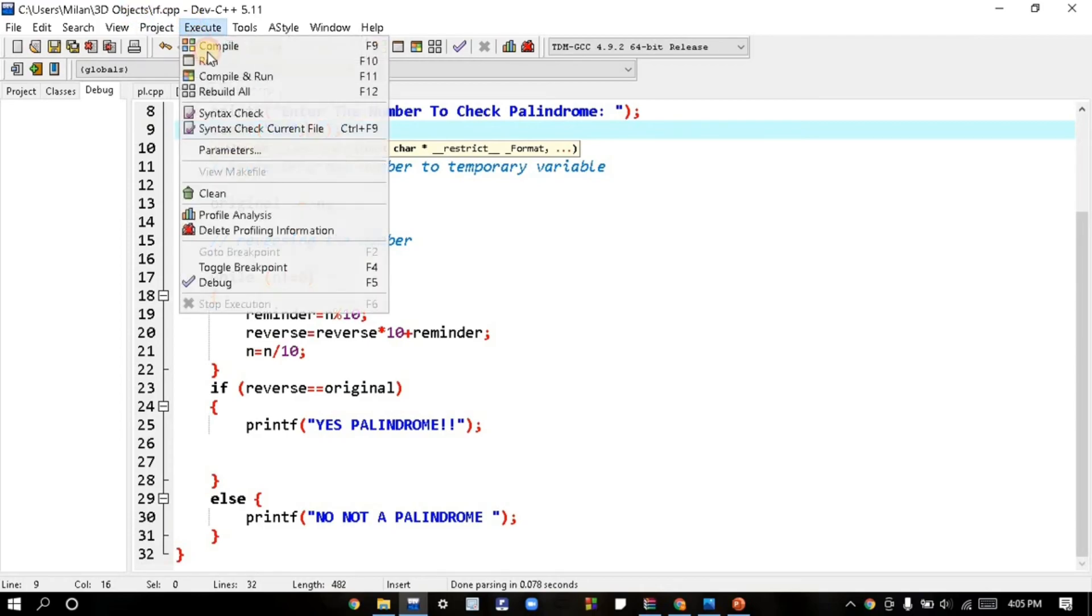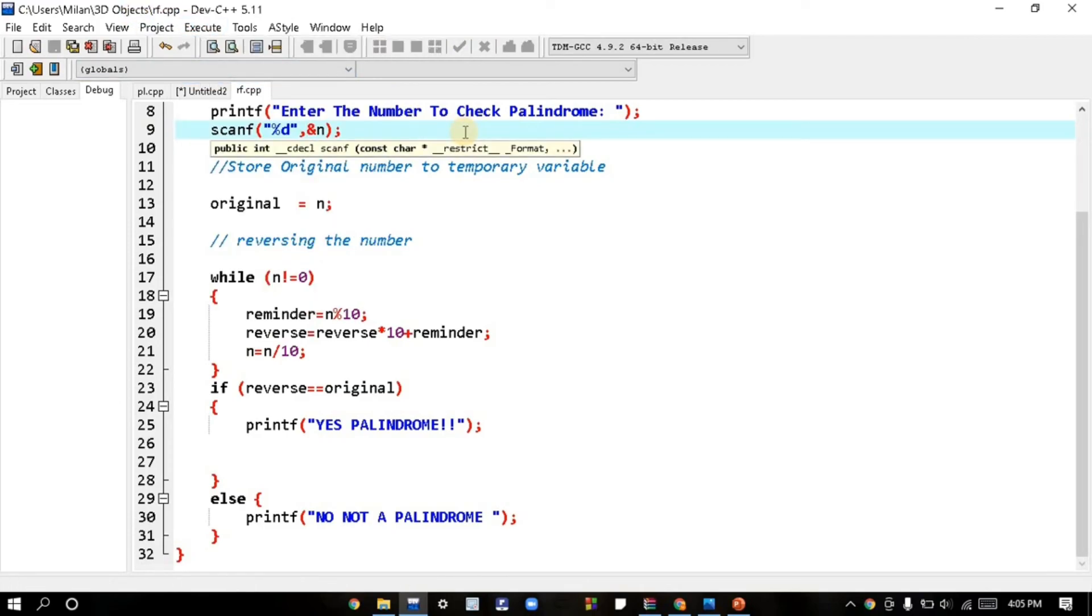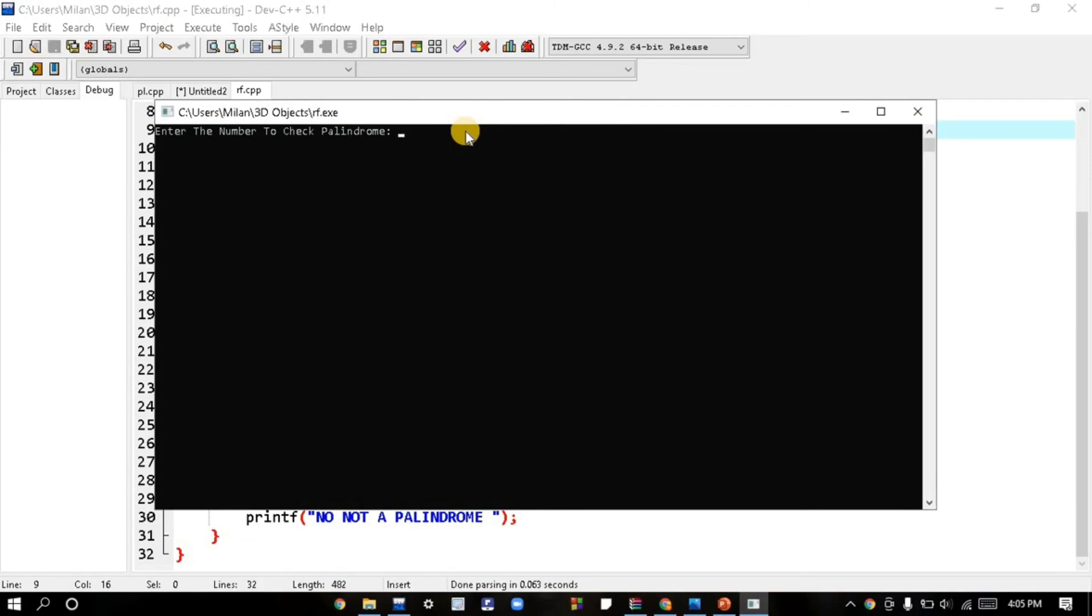One thing I should make clear: don't be afraid of bugs, because bugs will help you increase your programming skills. Let's execute the program. We can see the result: 'Enter the number to check palindrome.' I will enter 343, which is a palindrome number. Yes, our program has been completed.